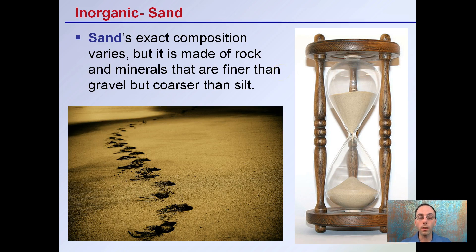We also have sand. The exact composition of sand varies, but it is made from rock and minerals that are finer than gravel but coarser than silt. Sand can be incorporated to help aerate soil and create separation of particles, and while its composition may be slightly varied, the purpose is still the same.